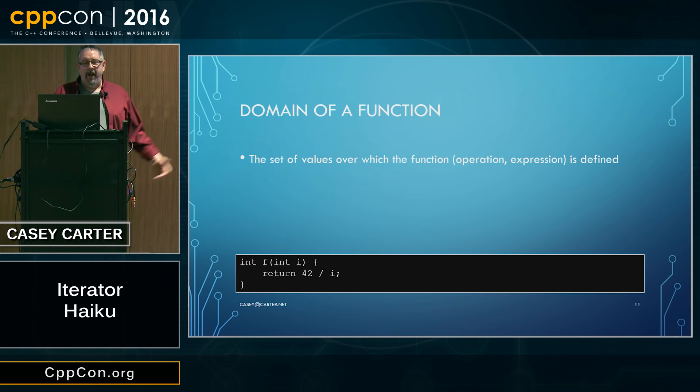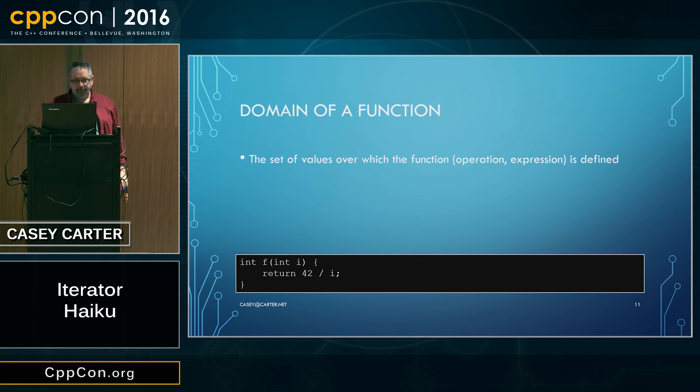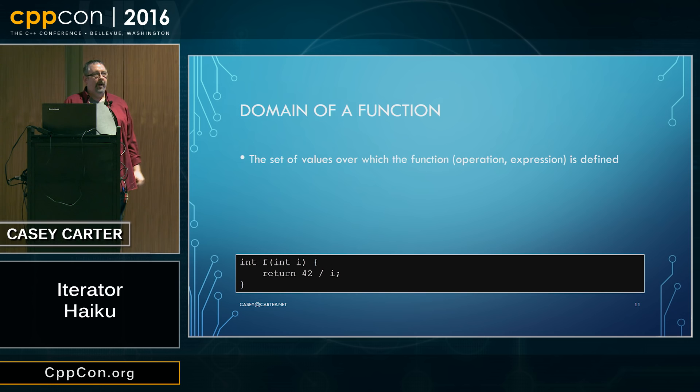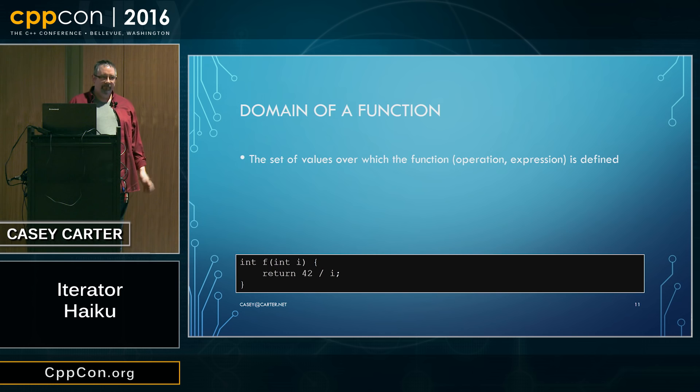The example is a really simple function that takes an integer and divides 42 by that integer. Something we've all seen in math — what happens if I pass zero to this function? We don't know. That's the problem. It's undefined behavior. Horrible things may happen. Nothing may happen. It may return seven. It may cause nasal demons to fly out of your nose. Zero is not a value in the domain of this function, although other integers are.